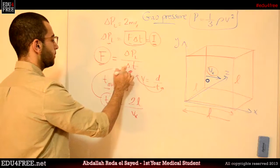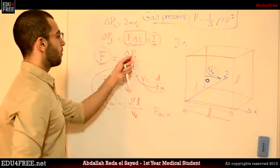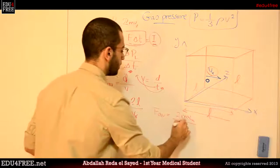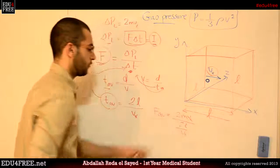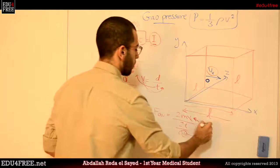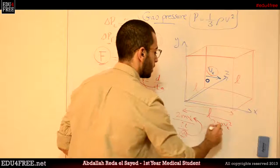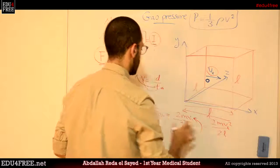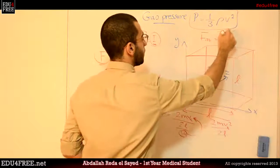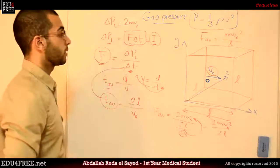We can plug this in to get the average force. The average force equals the momentum 2MVx divided by 2L over Vx. The denominator of the denominator moves upward, giving us 2MVx squared divided by 2L. So the average force finally equals MVx squared over L.